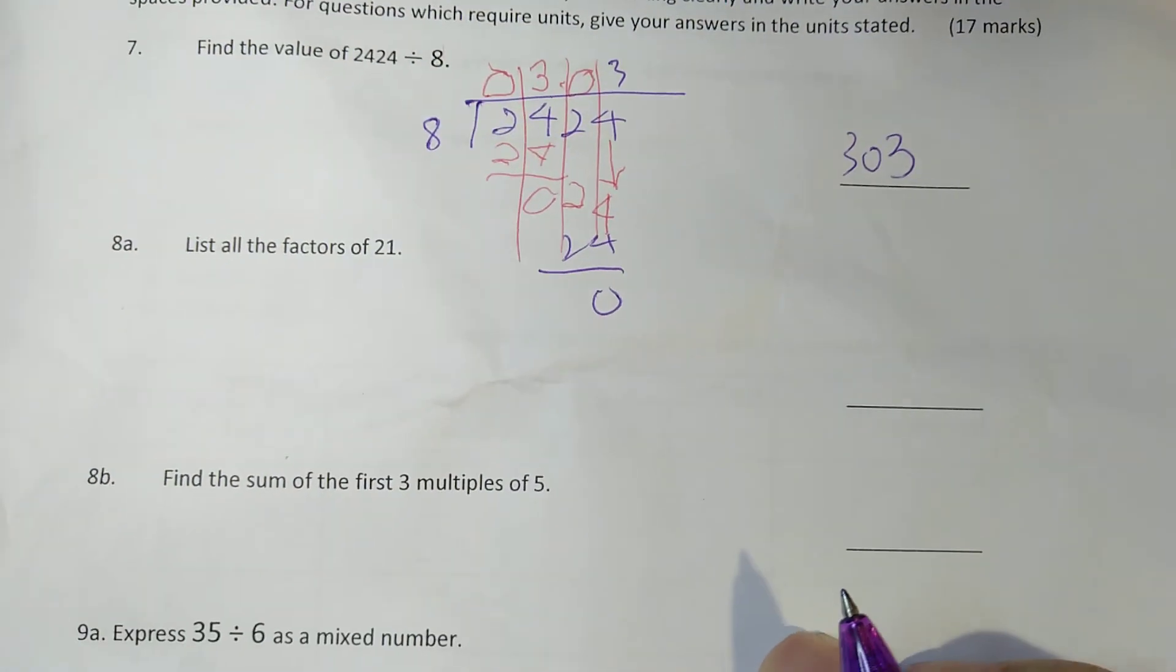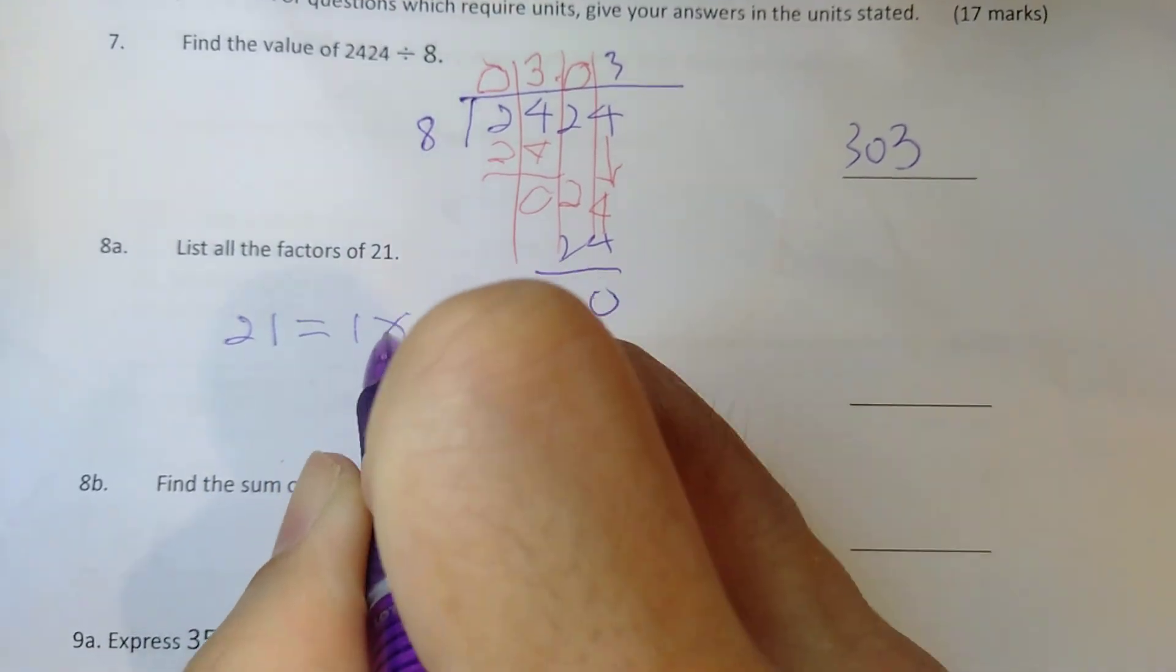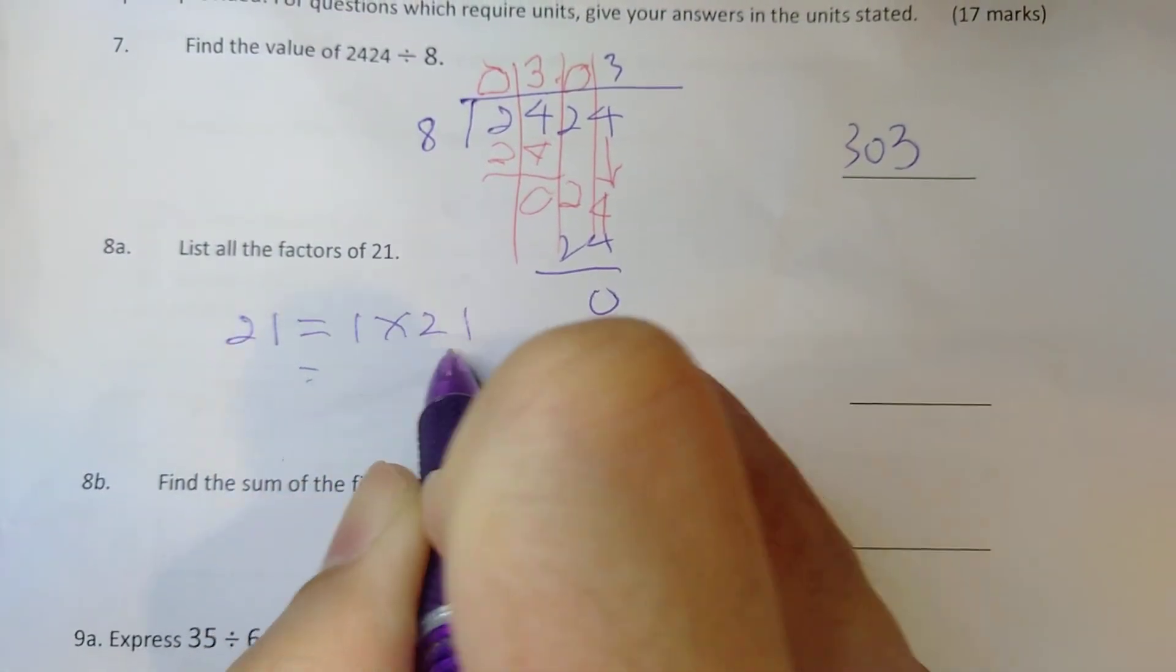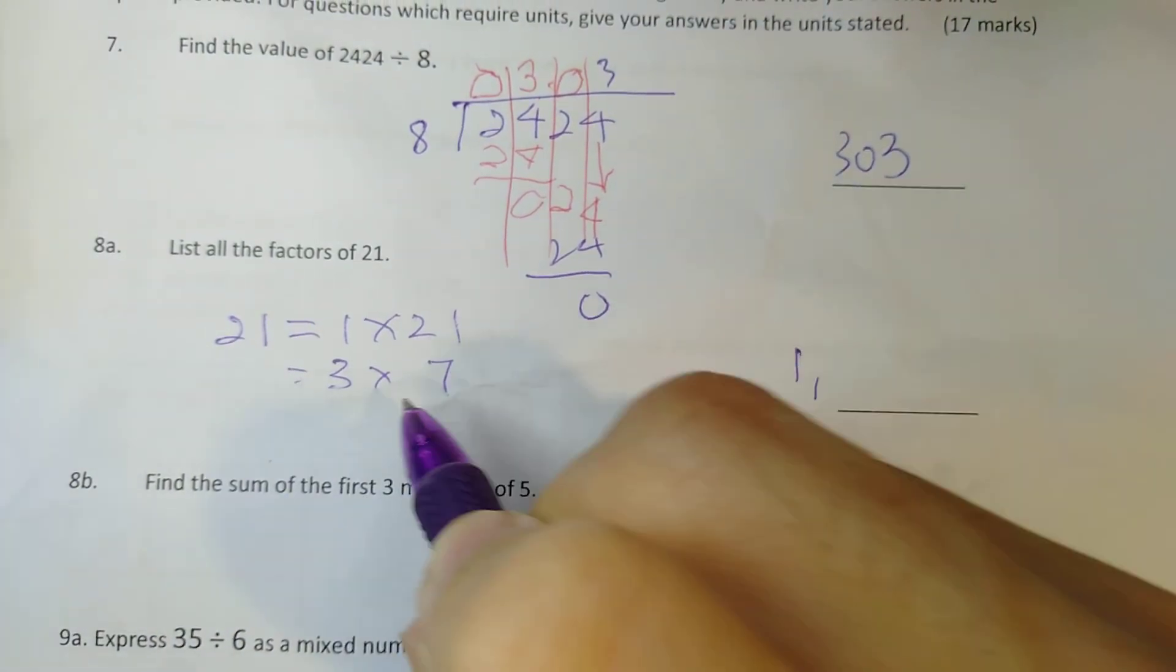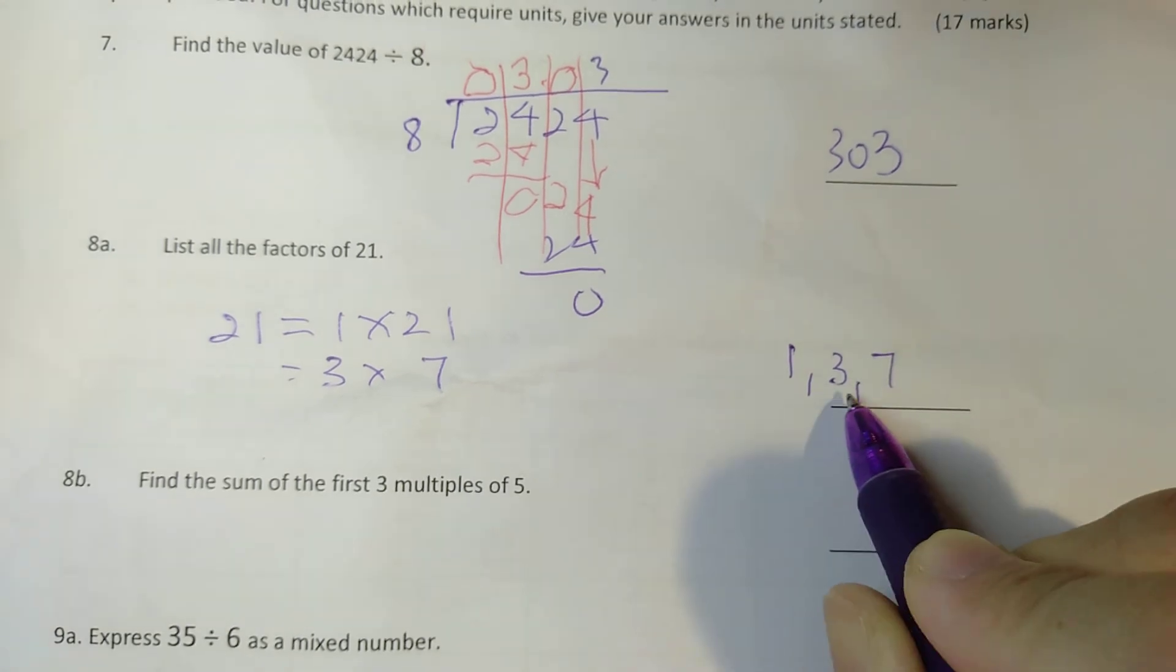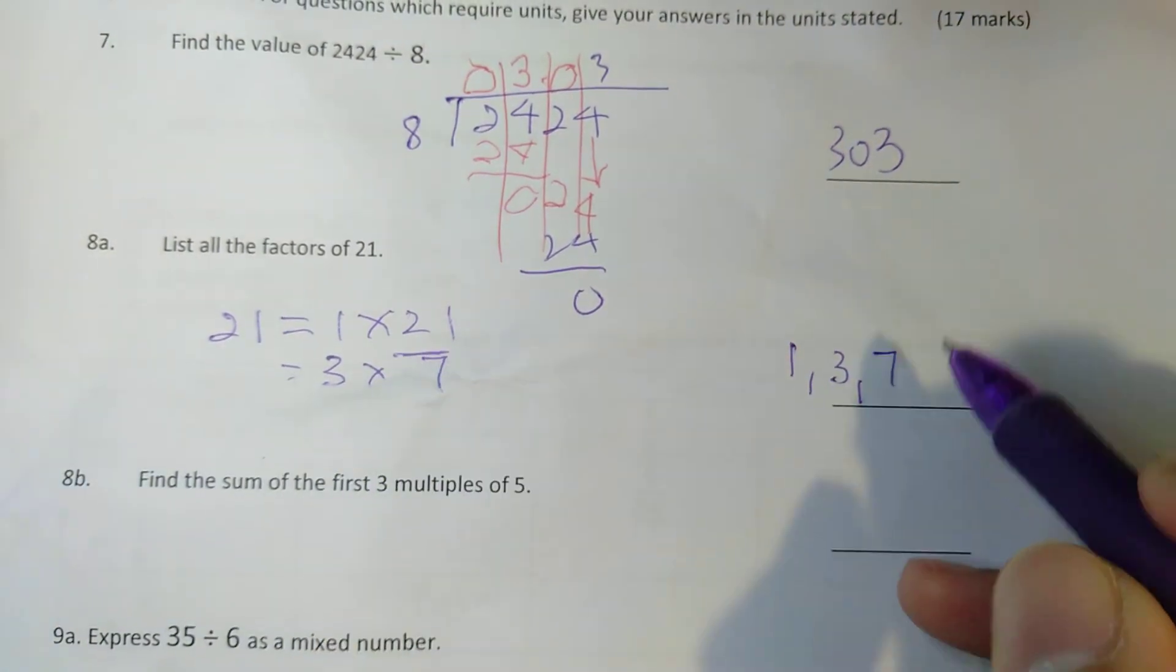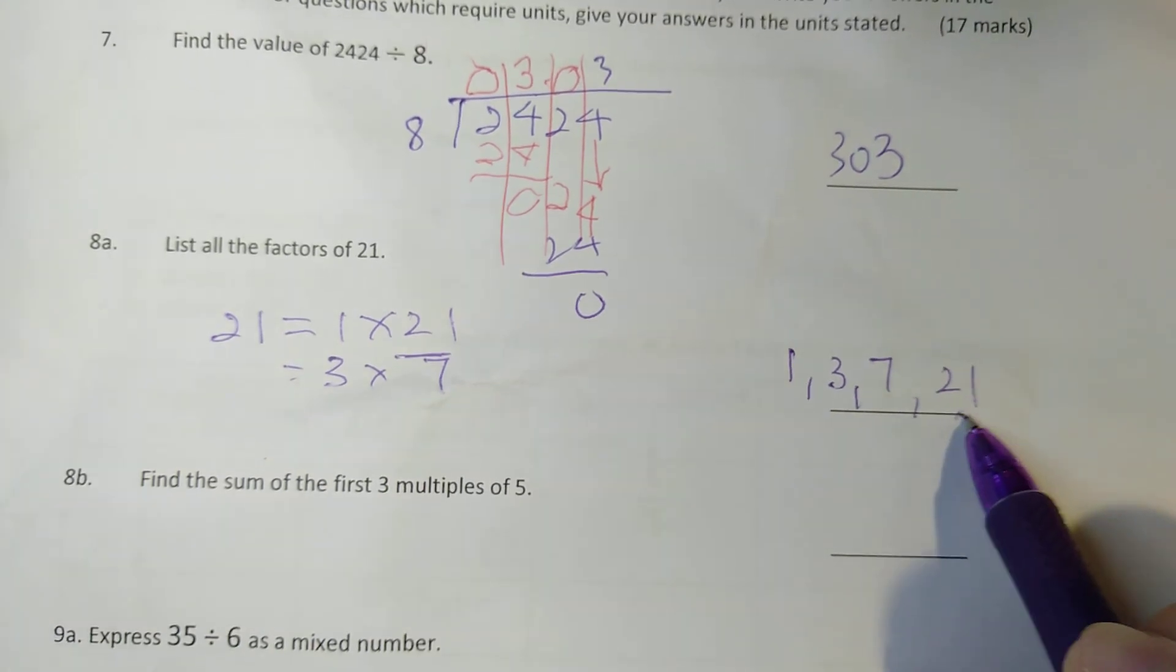Next one, list all the factors of 21. This means that 21 is equal to 1 times 21. 2, don't have. 3 times 7. And that's it. Now some of you, you actually got the working correct. However, you stop writing after 1, 3, and 7. 21 is also a factor of 21. So don't forget to write this 21.